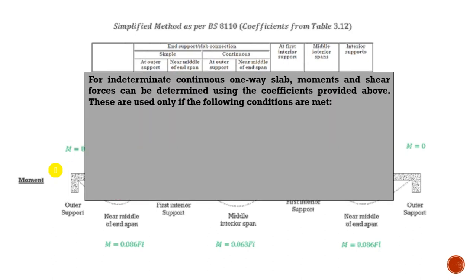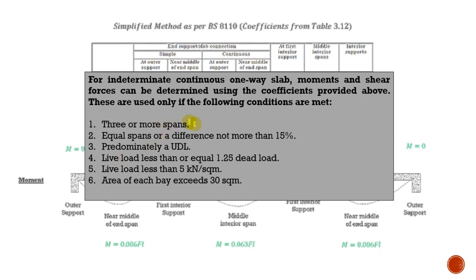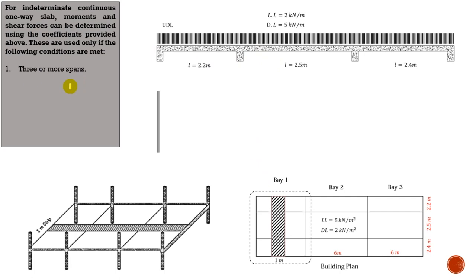This method requires you to meet certain conditions — there are six of them. First, the span has to be three or more spans and equal spans, or a difference of not more than 15 percent. Predominantly a UDL, live load less than or equal to 1.25 times dead load. Also the live load has to be less than 5 kN/m². The area of each bay must exceed 30 square meters. I'm going to go through them one by one for my example.